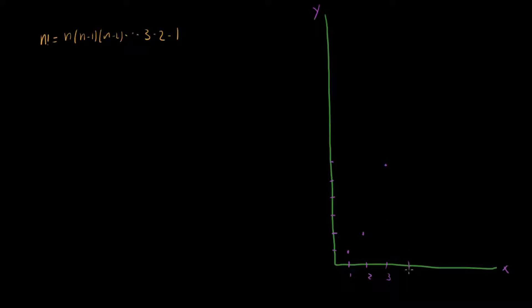What about 4 factorial? 4 factorial, well, now it's starting to get large. So we have 4 times 3, which is 12, times 2 is 24. So we're already somewhere way up here.